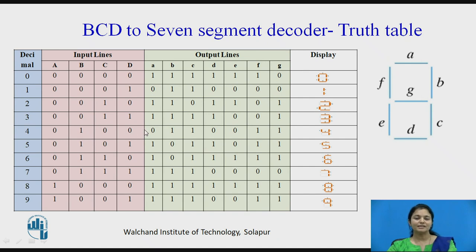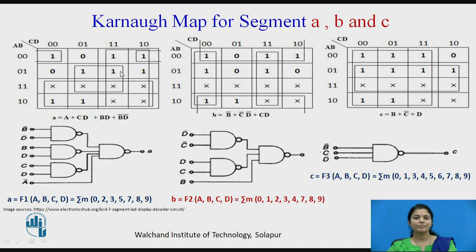Accordingly, we will go for designing its circuit. This input will be put into the first K-map. For segment A, it should be on for digits 0, 2, 3, 5, 7, 8, and 9. So we have placed 1s at positions 0, 2, 3, 5, 7, 8, and 9. Total 10 numbers are there and the remaining 6 are don't cares. After simplification, segment A has the expression: A + CD + BD + B̄D̄.